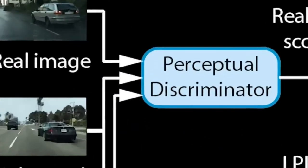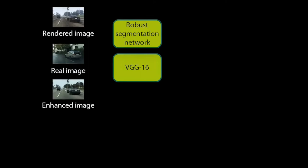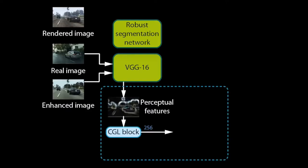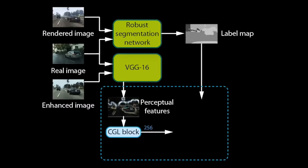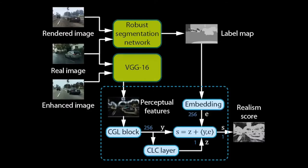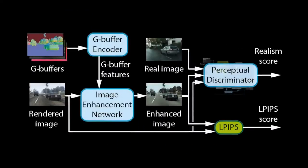The discriminator contains a robust semantic segmentation network and a network for extracting perceptual features — in this case, a VGG-16. We extract features from the VGG at multiple levels and pass them through a convolutional network. This differs from prior work that trains discriminators directly on images. Training on VGG features allows our network to quickly learn a model of realism at multiple perceptual levels. We further pass the unmodified rendered image as well as real images through the segmentation network to obtain a label map for each. The label map is used to specialize the discriminator on individual object classes. Since we use a pre-trained, robust segmentation network, the object classes are consistent for rendered and real images.